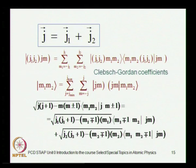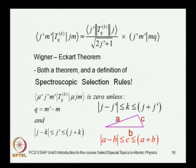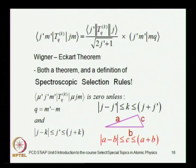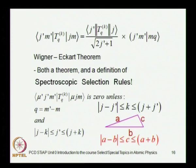We will discuss how Clebsch-Gordan coefficients are obtained — from first principles using recursion relations, where knowing one root coefficient allows you to get the rest. Then we will establish the Wigner-Eckart theorem, which is an extremely powerful tool in spectroscopy. It tells us that the probability amplitude for a transition from an initial state to a final state can be factored into a physical part — the reduced matrix element — and a geometrical part contained in the Clebsch-Gordan coefficient. This gives us spectroscopic selection rules like dipole selection rules and rules for quadrupole transitions.